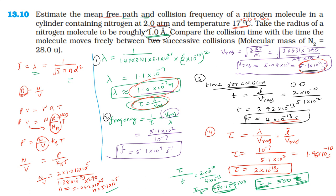The time between two consecutive collisions is 500 times the time taken during a collision. This means most of the time, molecules move freely.